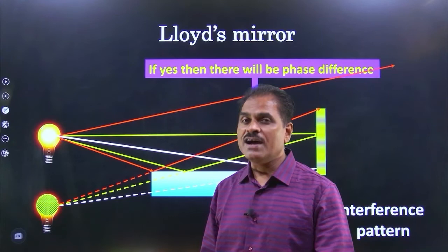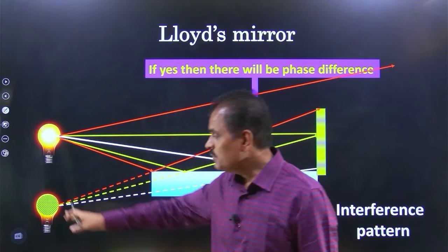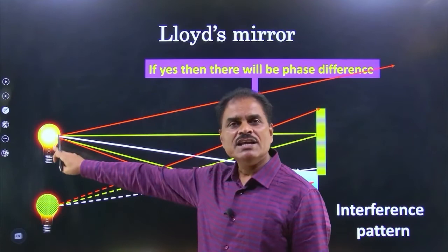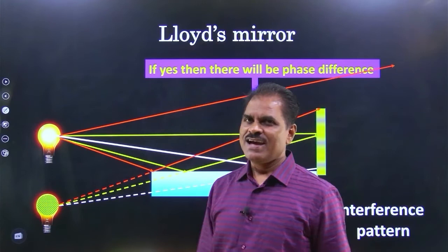उस point को हम लोग पुकारते source of light, परावर्तन में है नहीं, therefore it is called as a virtual source. So one our real source and this virtual source acting as coherent sources, and this is how we get interference pattern here and this mirror is called as Lloyd's mirror.